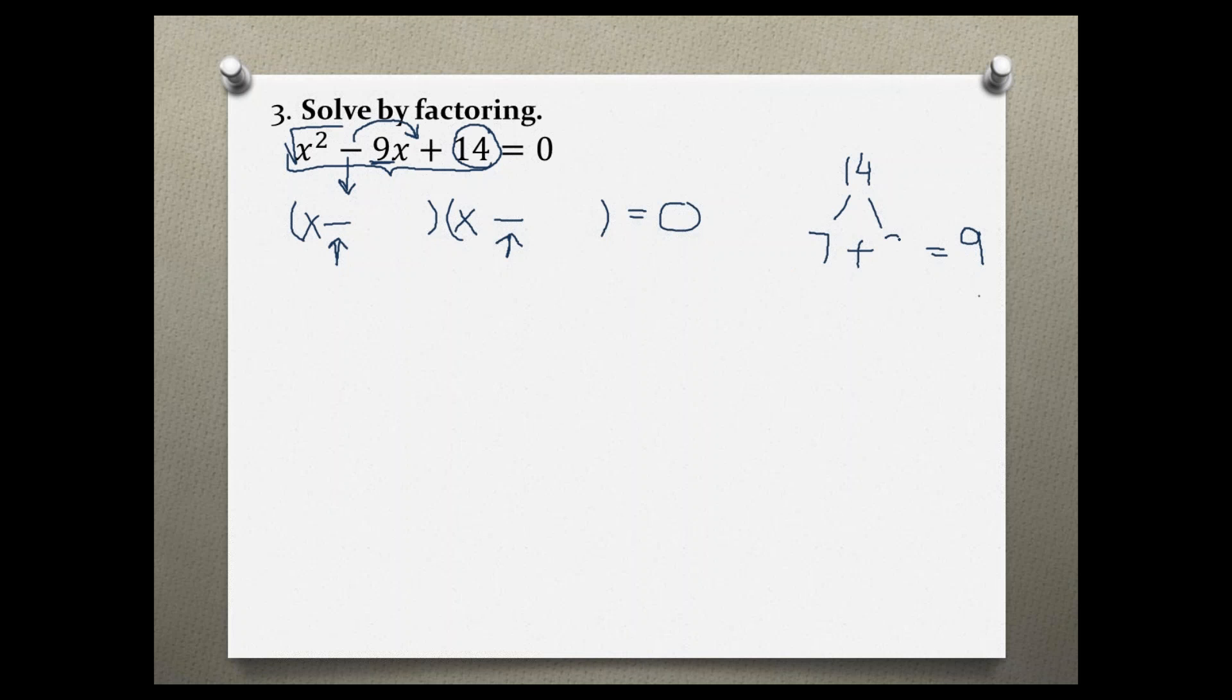The larger one of the two factors goes first and then there will not be any confusion with the signs. So now I factored my problem, and because of the zero product rule, I'm going to set each binomial equal to 0 individually.